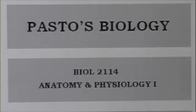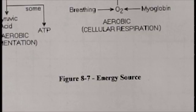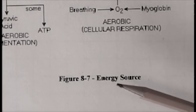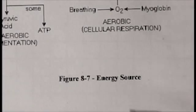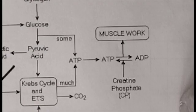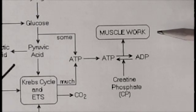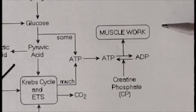Welcome to Pasto's biology, covering topics from the study guide. As you saw, muscle work is a very energy intensive process. We'll begin with figure 8-7 in your manual. Muscle work requires a lot of energy. By muscle work, we mean all of those processes that require ATP.